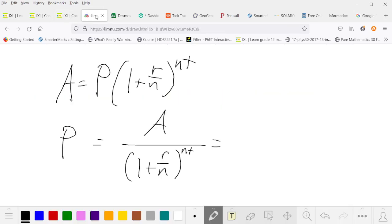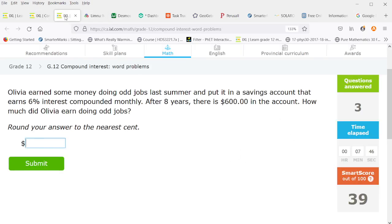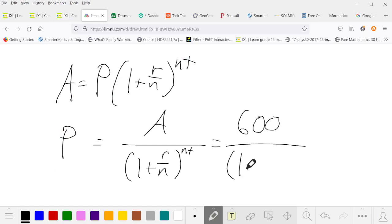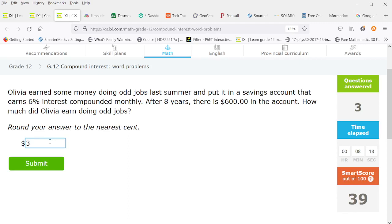So we know our final amount is 600. And we have 6% interest compounded monthly for eight years. So 0.06, 12 months a year, 12 times 8. So 1 plus 0.06 over 12. And our exponent, 12 times 8, is 96. So she started with roughly $371.71.